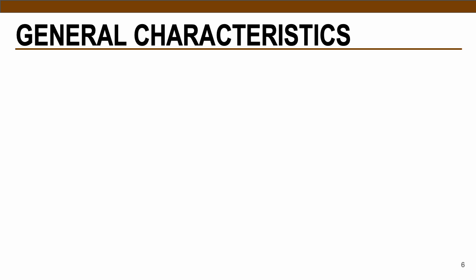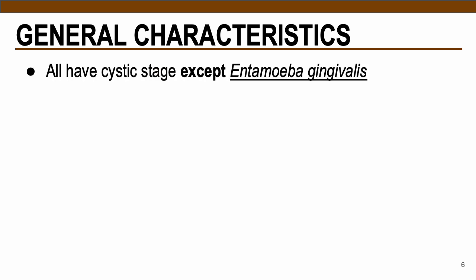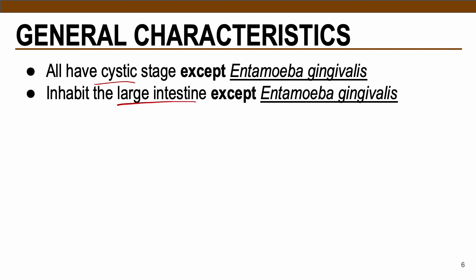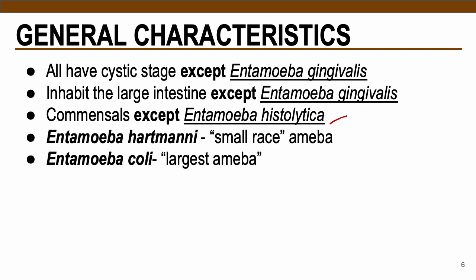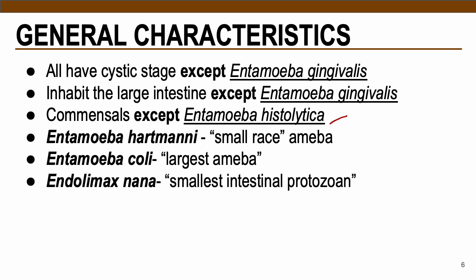Other general characteristics to note for the class Lobosea: all amoebas have a cyst stage except for Entamoeba gingivalis, which only has the trophozoite as its morphological form. All inhabit the large intestine except Entamoeba gingivalis, which is only present in the mouth of the infected host. All are commensals — non-pathogenic — except for Entamoeba histolytica, the only pathogenic intestinal amoeba. Other species include Entamoeba hartmani (the small-race amoeba), Entamoeba coli (the largest, with 1–8 nuclei in cyst form), and Endolimax nana (the smallest intestinal amoeba).